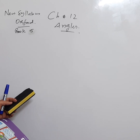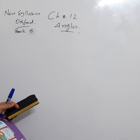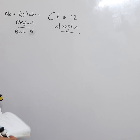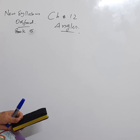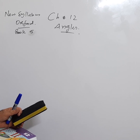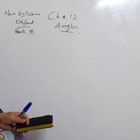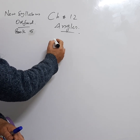We'll be starting angles, chapter number 12. This is new syllabus Oxford Book 5. We'll be doing it step by step and will try to make it very easy for you. We'll be talking in English for your convenience because this is an Oxford book. Let's start.